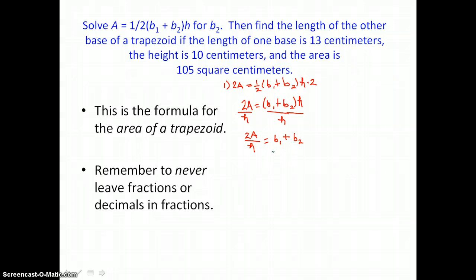And now to get b₂ alone, we just want to subtract b₁ from both sides of the equal sign. So 2A over h minus b₁ is what b₂ is equal to.